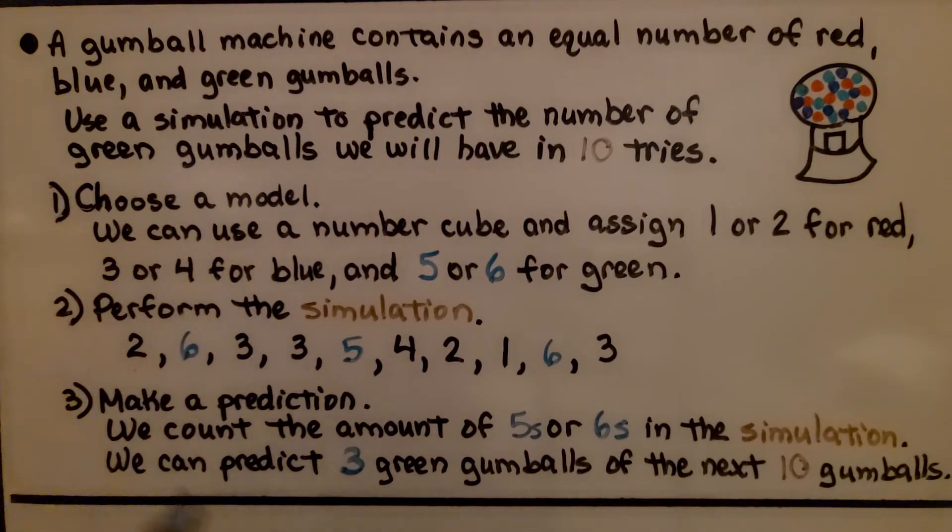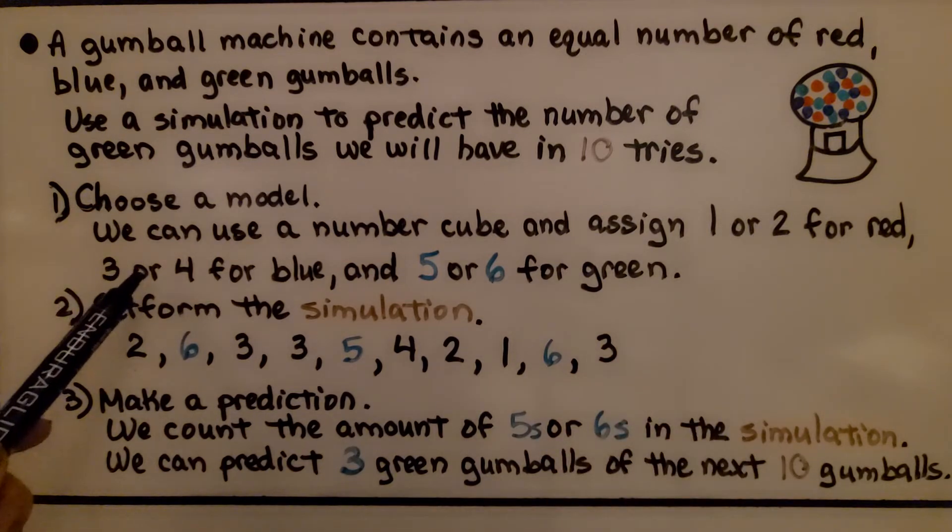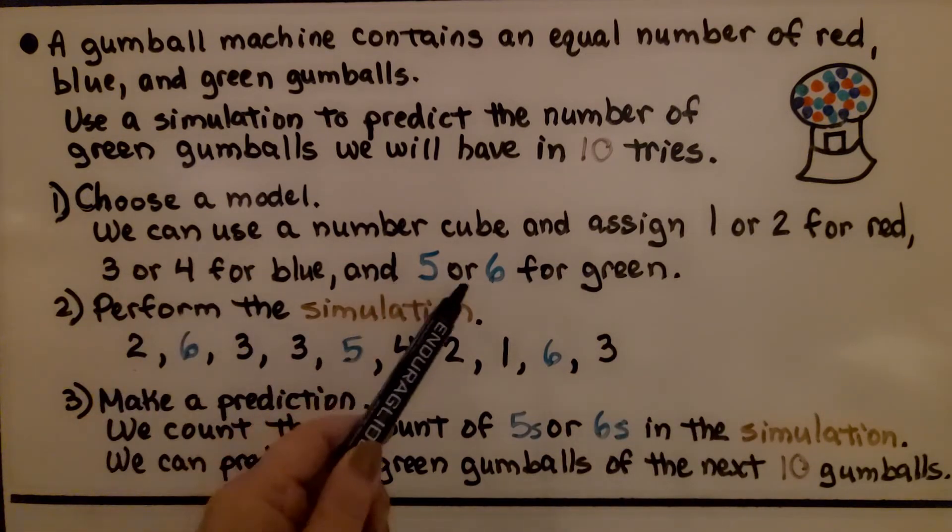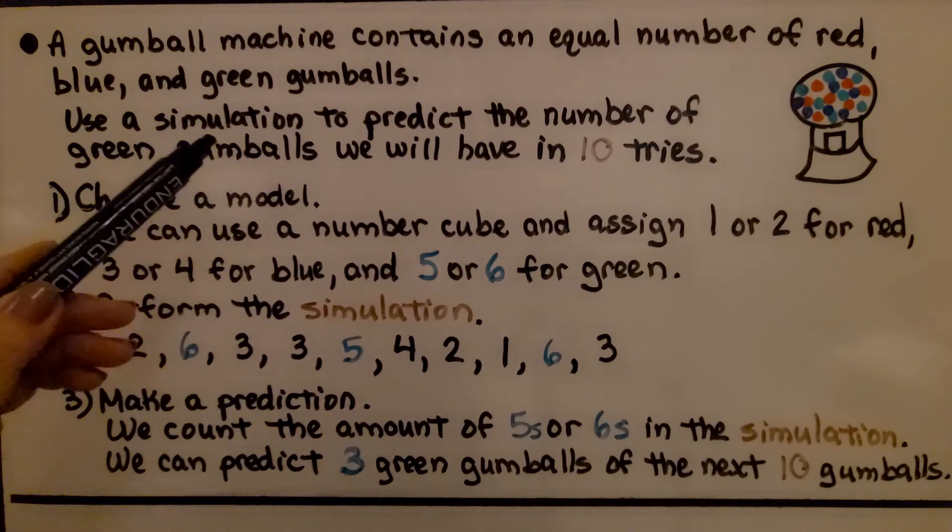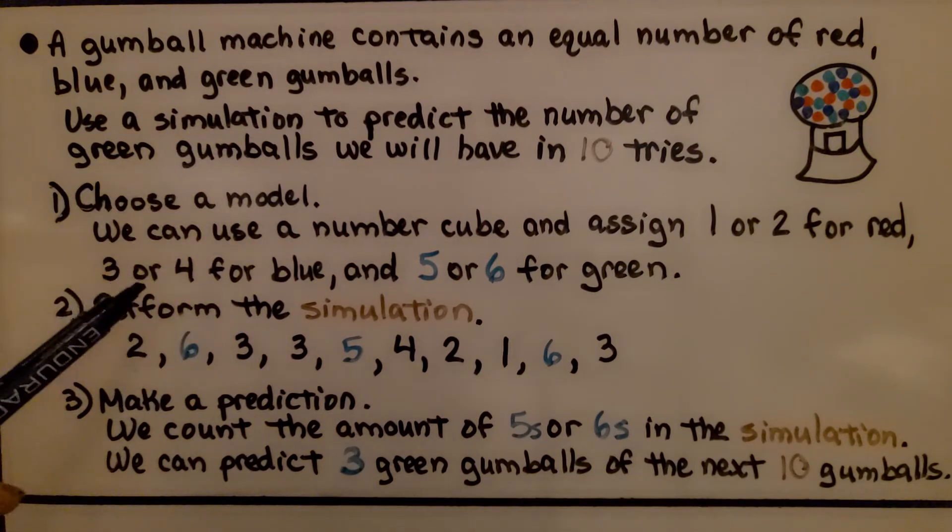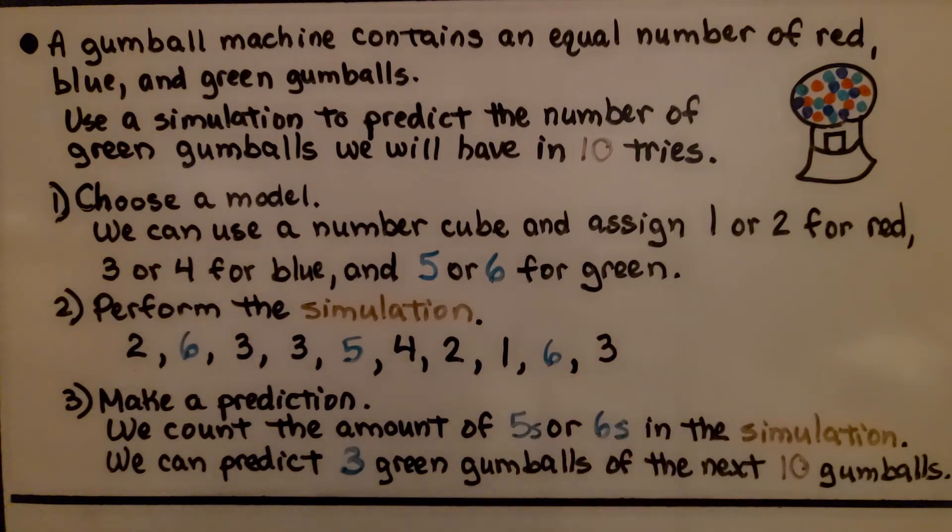We could use a number cube and assign one or two for red, three or four for blue, and five or six for green. Since there are three different colors, but a number cube has six sides, we can assign two numbers for each color.